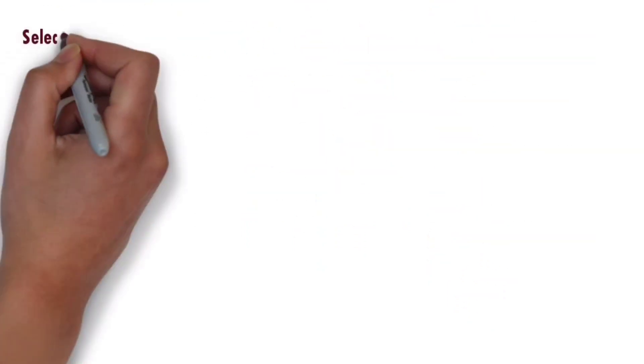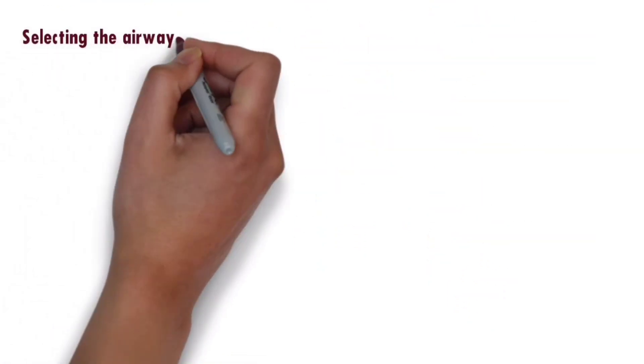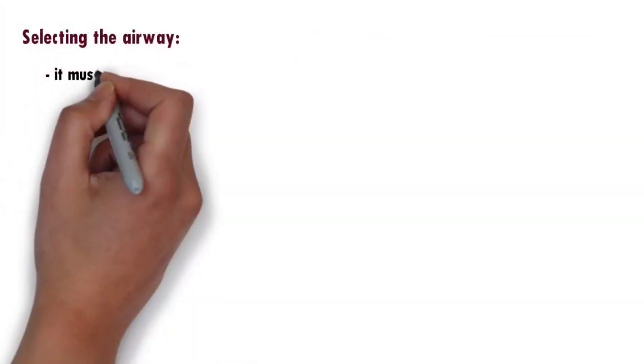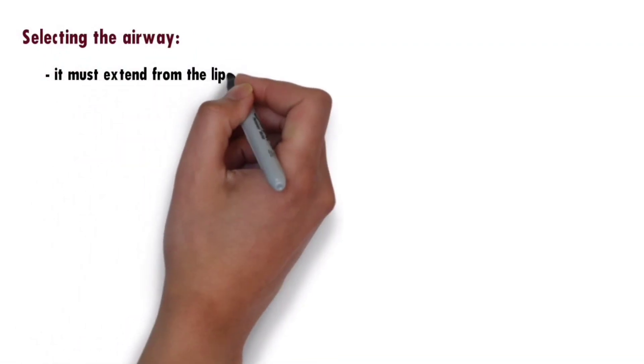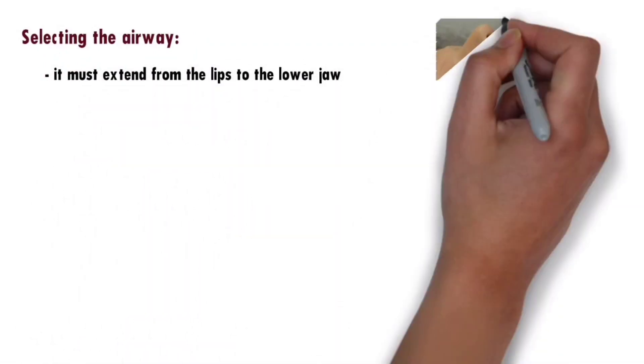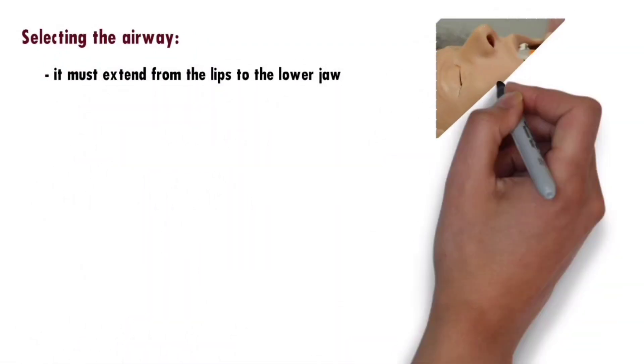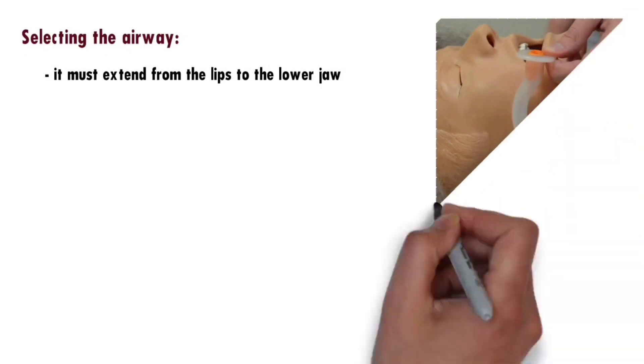As it is open on the sides, secretions will not block the airway. To select the correct size of the airway, place it at the side of the person's face — it must extend from the lips to the lower jaw.